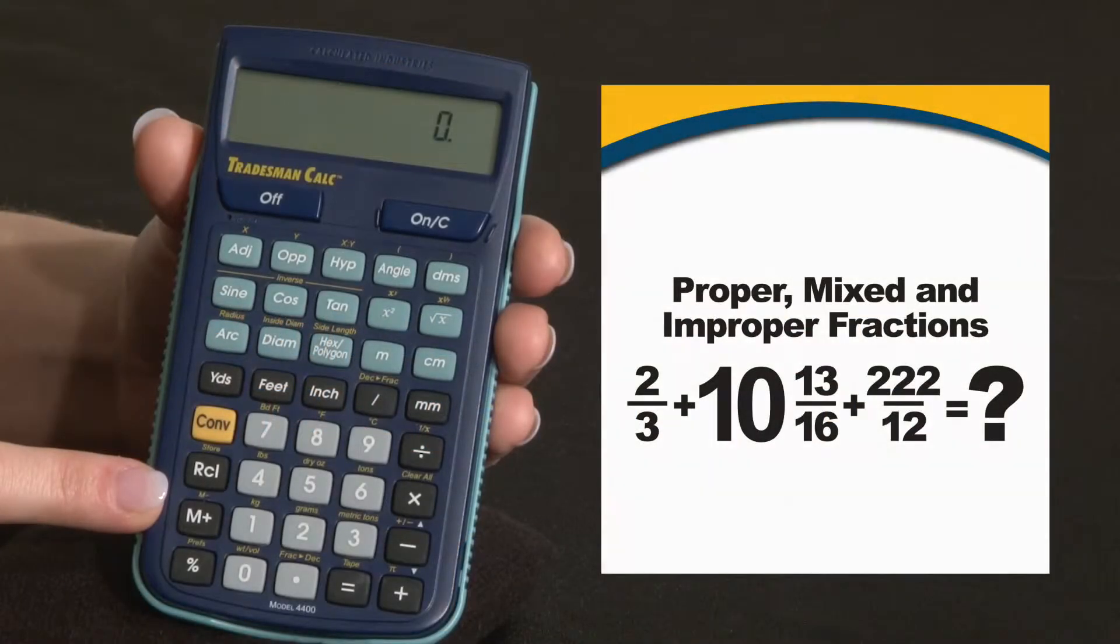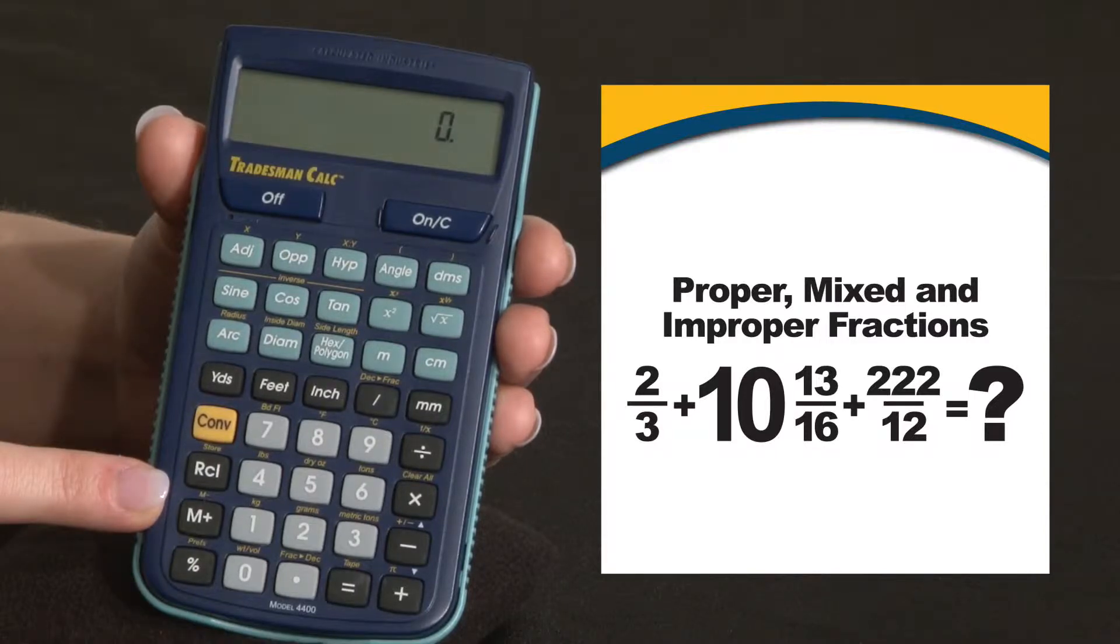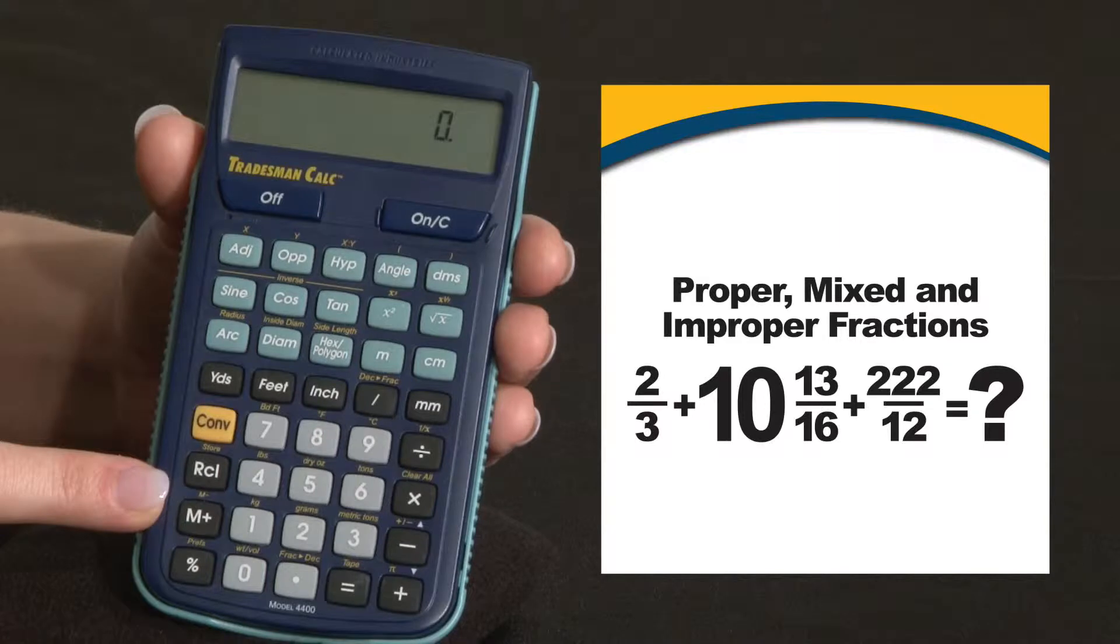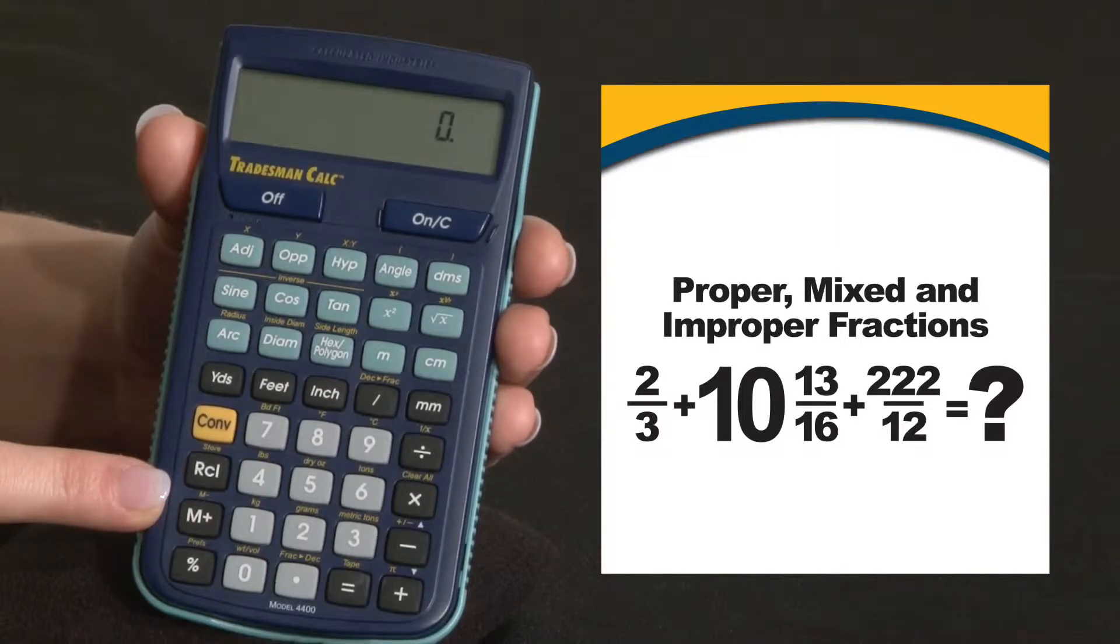The Tracement Calc can work with and simplify architectural or ruler fractions, proper fractions, mixed number fractions, and improper fractions, and show the lowest common denominator.